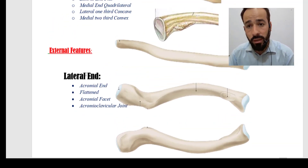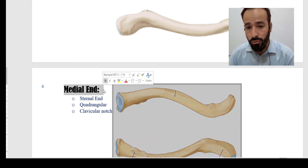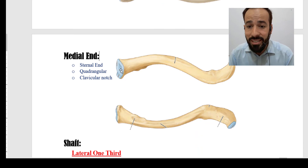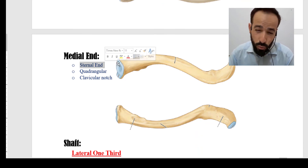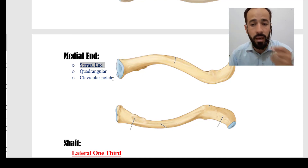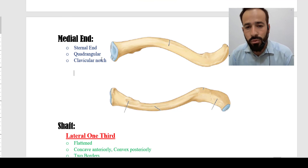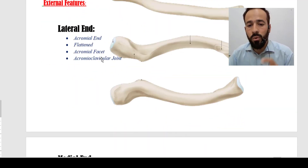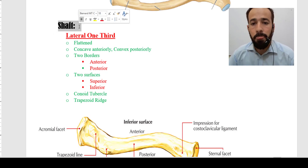You can see here the medial end of this bone — it is also known as the sternal end, it is quadrangular, and it has a clavicular notch in it. These were the important points about both the lateral and medial ends of the clavicle bone. In the next lecture, we will discuss the shaft of the bone.